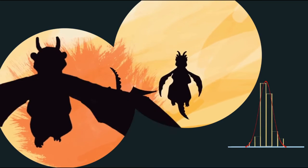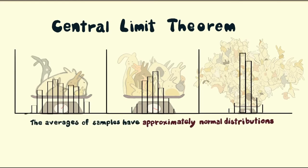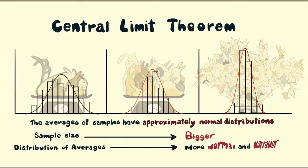So now we know that regardless of the true distribution, the Central Limit Theorem shows that the average of values drawn from the distribution will always be approximately normal. Furthermore, the bigger the sample size, the narrower the distribution of averages becomes and the closer the sample mean gets to the true population mean.